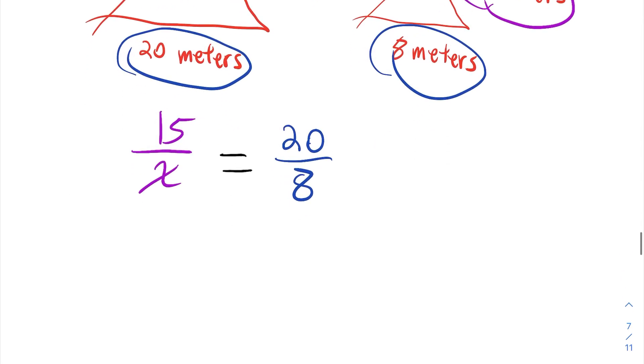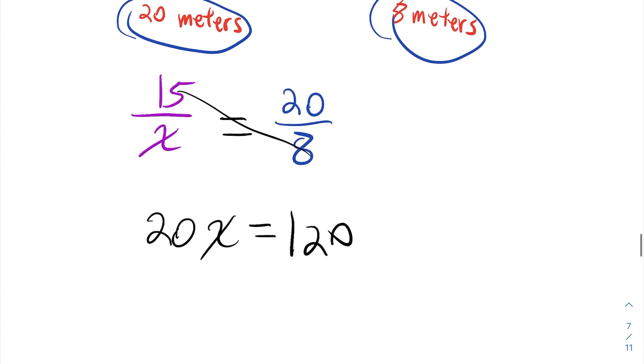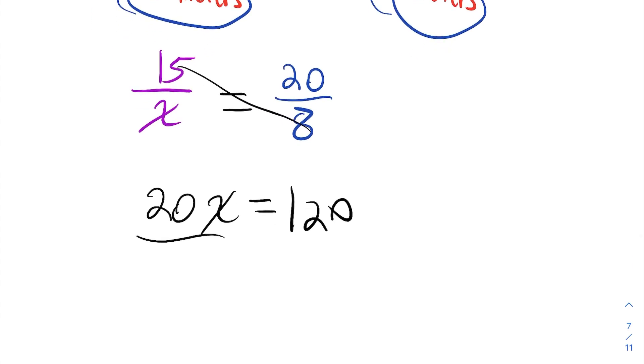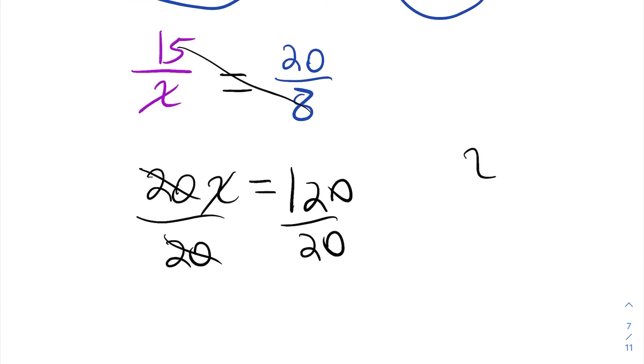Once again, we solve proportions with simple cross multiplication. I get the first cross product here. That one there is 20X, while the other cross product, 15 times 8, is 120. This cross product here leads to 120. And then, to solve for X, we just divide both sides by 20, and we get that X is equal to 6.